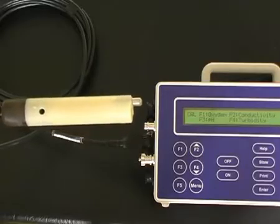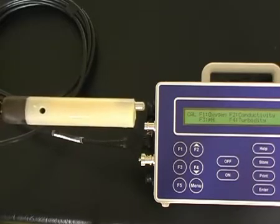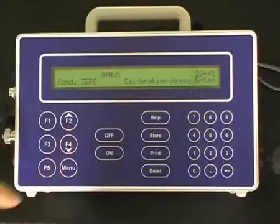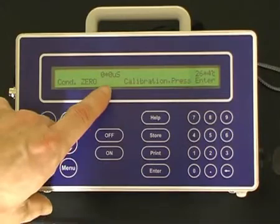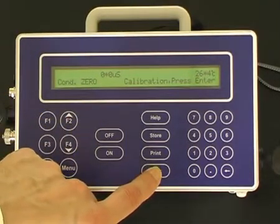The first point calibration of the conductivity sensor is a dry sensor in air, which should measure zero. Press F2 for conductivity. Once the sensor has equilibrated to zero, press the Enter button to calibrate the first conductivity calibration point.